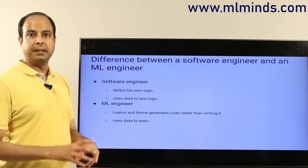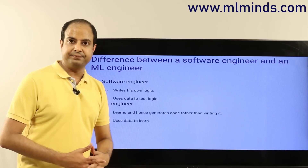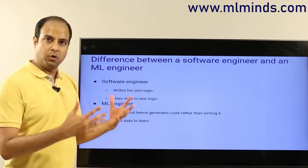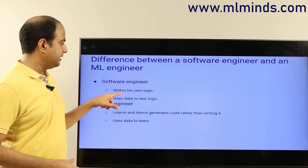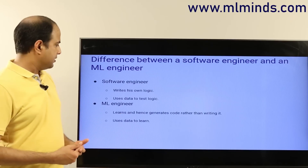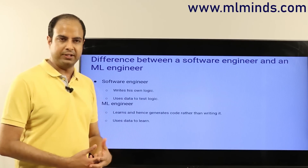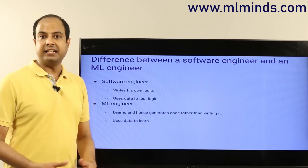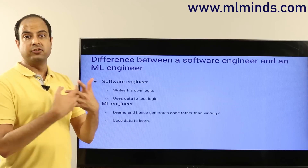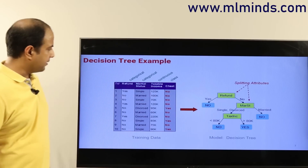A software engineer writes his own logic — the business logic — and codes the software, then uses data to test that logic through unit tests. A machine learning engineer does not write his own logic; instead, he learns and finds patterns from the data. He needs training data available. The data tells the business logic — you derive those patterns from the data and automatically generate the business logic rather than writing it. He uses data to learn the model.